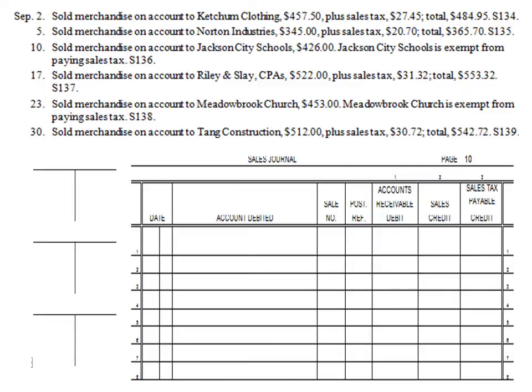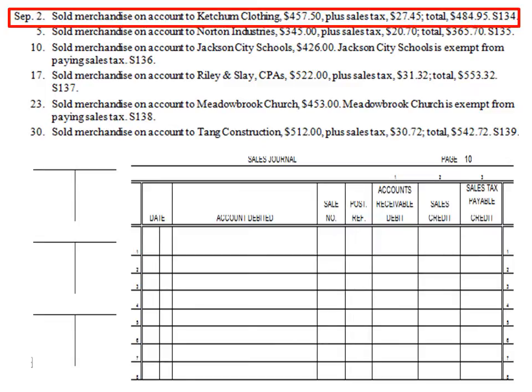Let's look at the first transaction: sold merchandise on account to Ketchum Clothing for $457.50 plus sales tax of $27.45, for a total of $484.95, Sales Invoice S134. The three accounts used are Accounts Receivable/Ketchum Clothing, Sales, and Sales Tax Payable. The debit to Accounts Receivable is $484.95, representing the total of the sale.